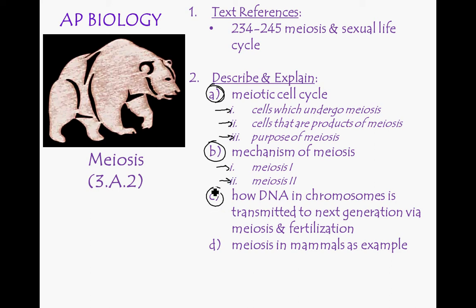And then objective C: how to explain how DNA in chromosomes is transmitted to the next generation via meiosis and fertilization — we're going to focus on the meiosis part. And D: using mammalian meiosis as an example to show all of these details — meiosis I, meiosis II, the cells that undergo it, etc.